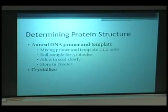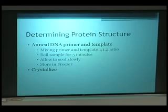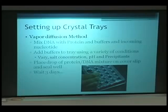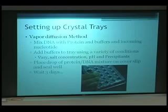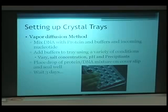Now we're ready to do the real science — determining the protein structure. First we anneal the DNA primer and template by mixing them together in a 1 to 1.2 ratio, boiling the sample for five minutes, and allowing it to cool slowly. Then you can store it in the freezer. We crystallize using the vapor diffusion method, mixing the DNA with the protein, buffers, and incoming nucleotide, adding the buffers to a tray, and running screens varying salt concentration, pH, and precipitants. You place a drop of the protein-DNA mixture on a cover slip, seal the well, and wait three days to see if you get crystals.